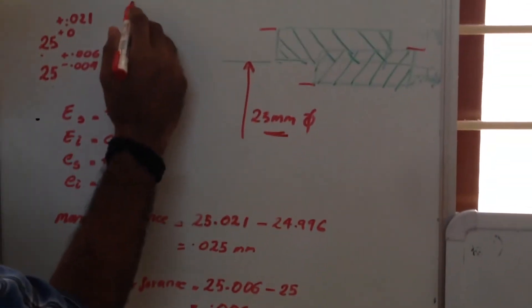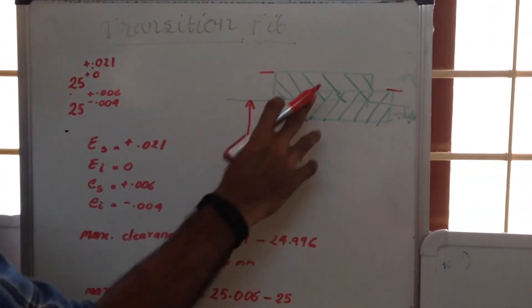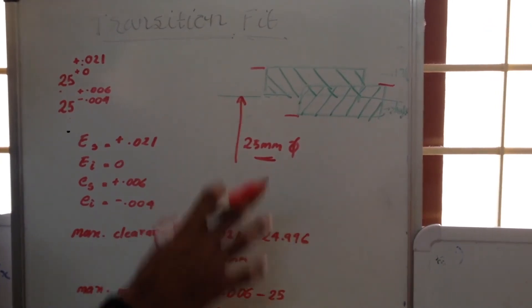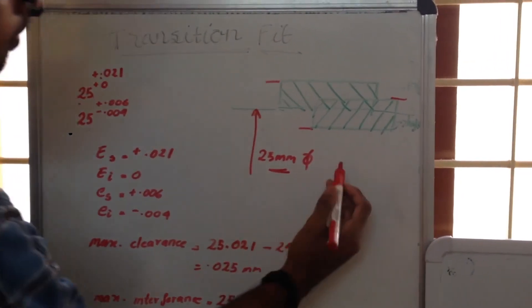For transition fit, the hole shaft system may be tight or loose, that can be varied.